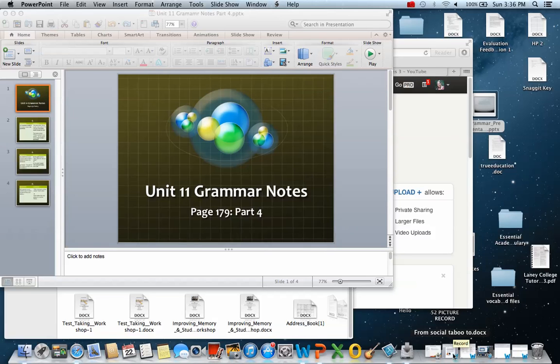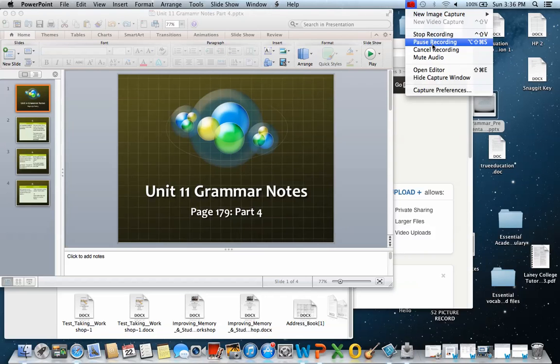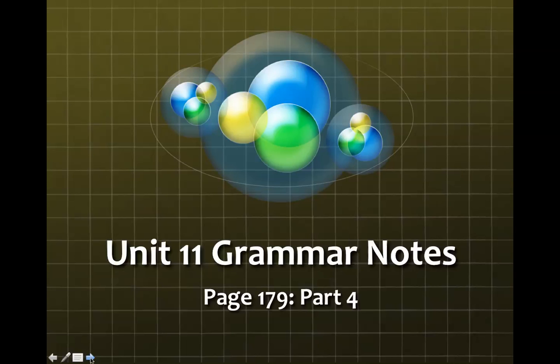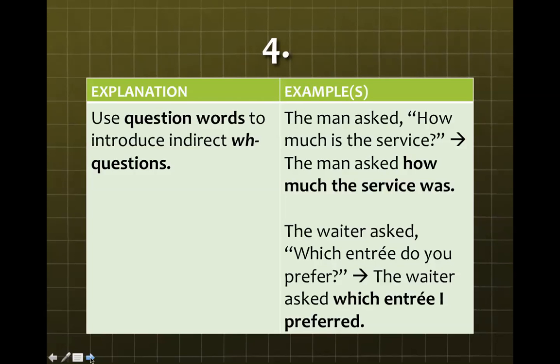Now we're on part four of the grammar notes, which is on page 179. We use question words to introduce indirect WH questions. So the direct question is, the man asked, 'How much is the service?' And then that becomes the indirect question: The man asked how much the service was.